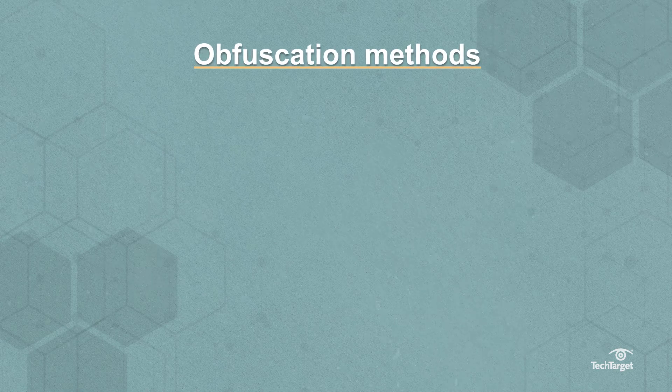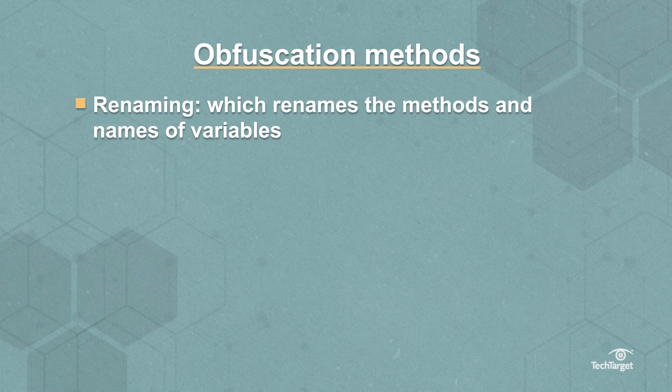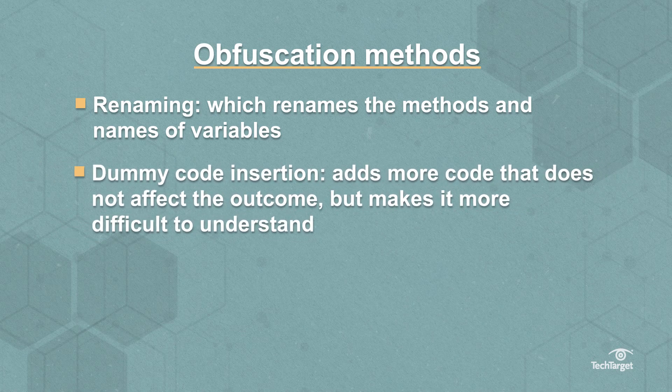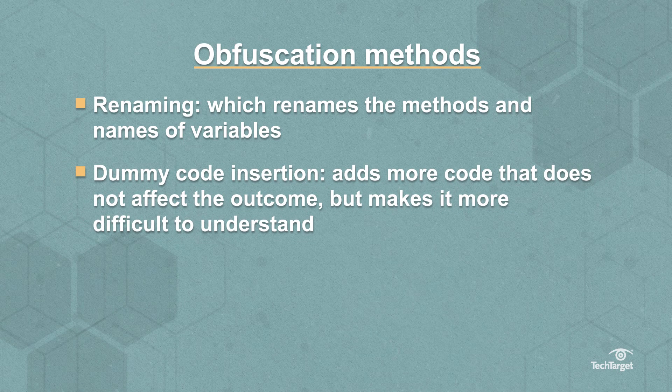Some obfuscation methods include renaming, which renames the methods and names of variables, and dummy code insertion, which adds more code that does not affect the outcome but just makes it more difficult to understand.